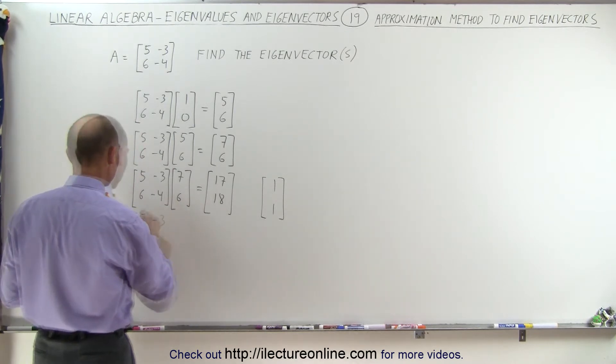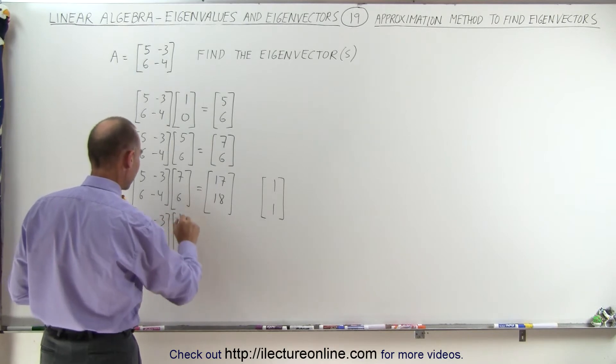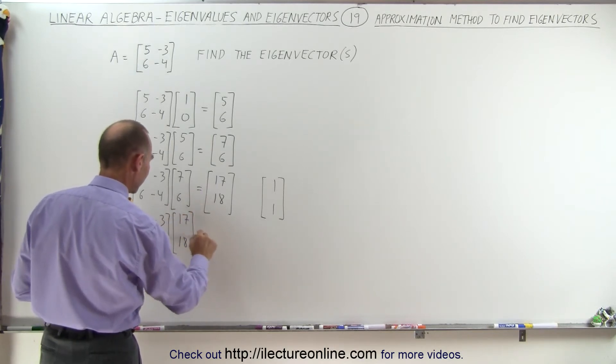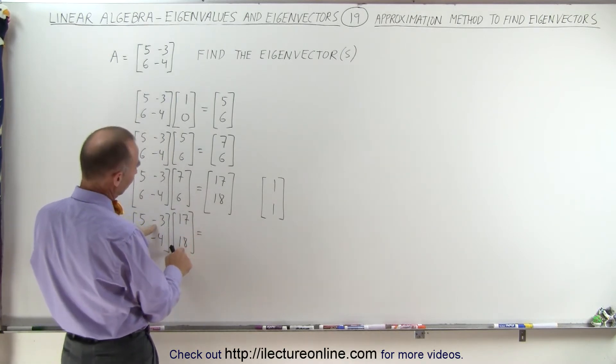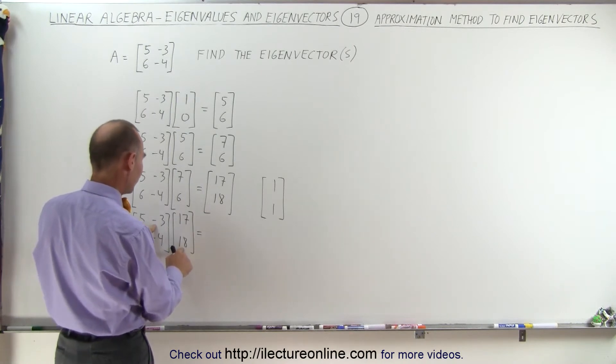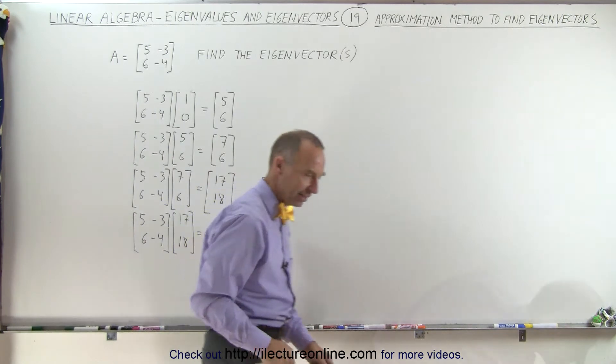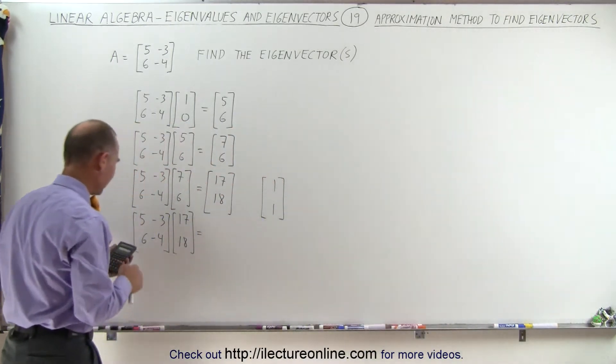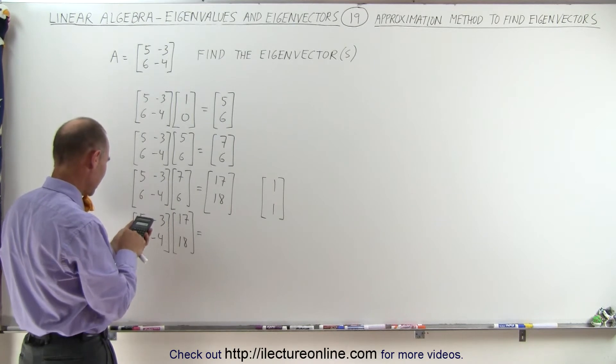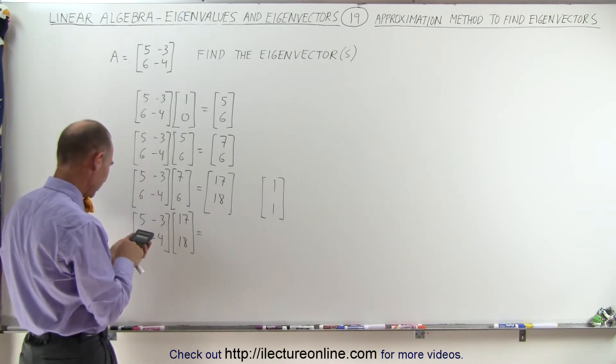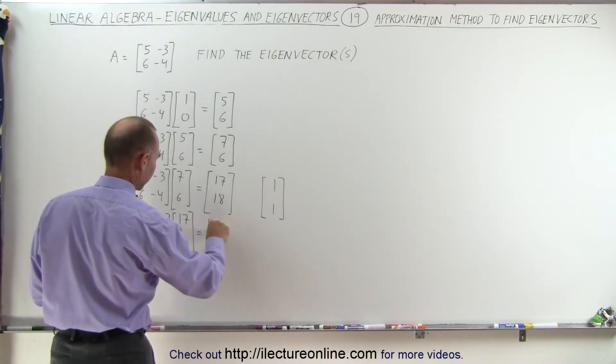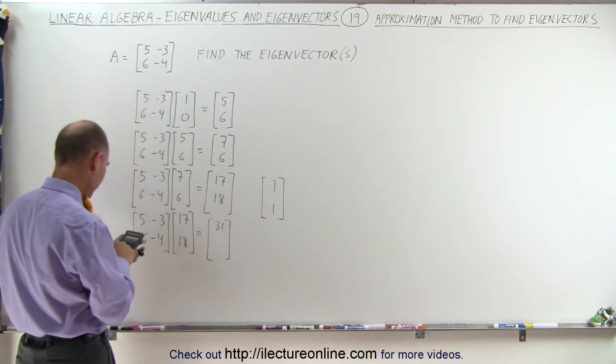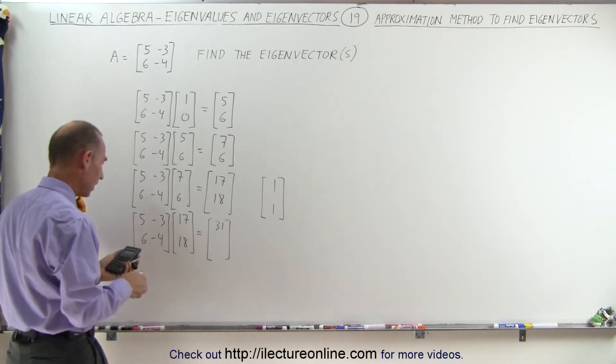So I'm going to go ahead and take -4 and multiply this times 17 and 18. At this point, I may need a calculator. Let's see what happens. 5 times 17, that's 85 minus, that would be 54, 85 minus, let me get it calculated. My brain is going to get too tired here. So 5 times 17, so 17 times 5 equals 85, and that's minus 3 times 18 is indeed 31. So we get a 31 here, and over here we get 17 times 6, and that's a minus 4 times 18, and we get 30.